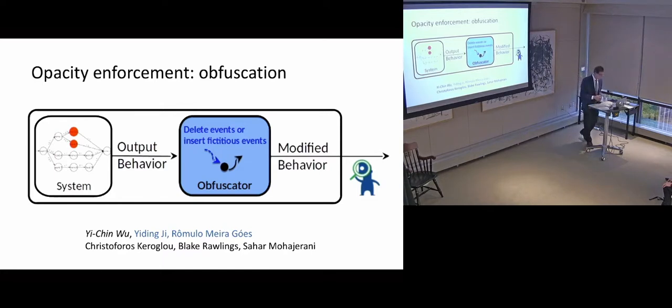So, the question that comes up is, how do you design that blue box there? And, again, in an automated manner, given a particular model of your system, a set of observations, and the secrets of the system. So, we've been able to make quite a lot of progress on that over the last few years. So, currently, two of my PhD students who are here today are working on various aspects of that problem. That's Iding Ji and Romulo Meha-Goes, and also several post-doctoral students, including Blake Rawlings, who is here, and Sahar Mohajirani, who could not be here.